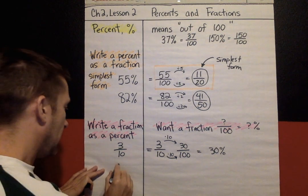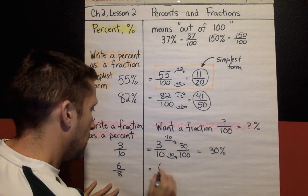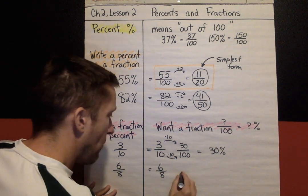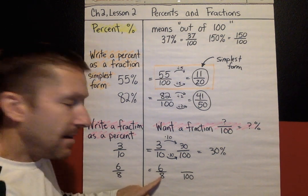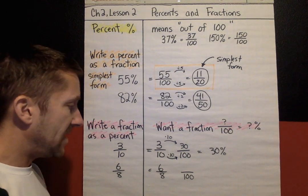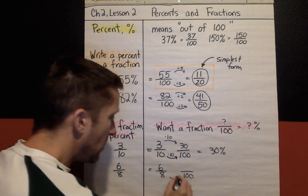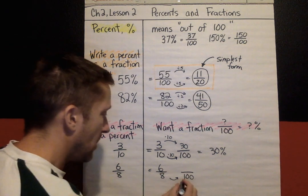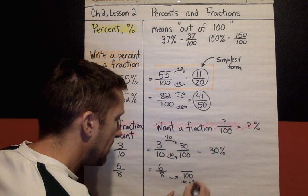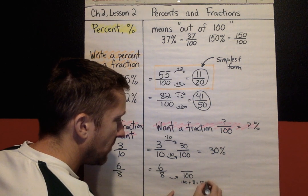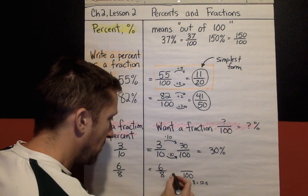Another example, 6/8. I want to get a fraction out of 100. So I'm looking at 8 and thinking to myself, how do I go from 8 to get to 100? And it's not jumping out to me right away. Again, if you don't know what this number is, you can divide 100 divided by this number. If you calculate 100 divided by 8, you are going to get, your calculator says, 12.5. That is the number that you're going to multiply right here. Times 12.5. And we need to multiply 6 times 12.5.